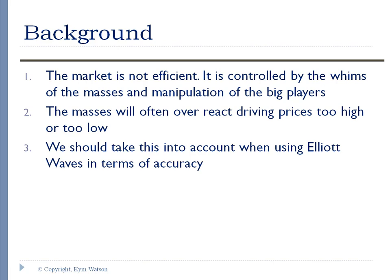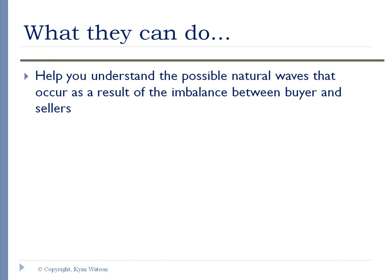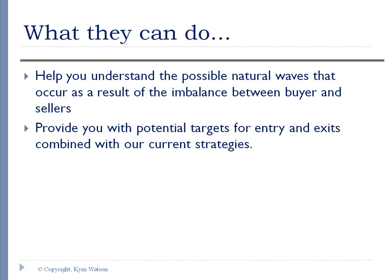We should take this sort of overreach in terms of these overbought and oversold periods into account when using Elliott waves in terms of accuracy. A lot of people expect them to be a real accurate tool, and if anyone tells you they're accurate, it's nonsense. But what they can do is help you understand the possible natural waves that occur as a result of the imbalance between buyers and sellers. Generally, if the market's being really bought, you'll see price push up as there's an imbalance. There's not enough people selling, so to get the market to move up, you need higher prices.